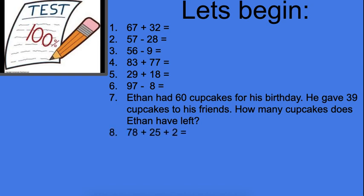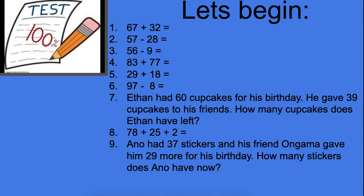Number eight, 78 plus 25 plus 2. Number nine, a story sum. Ano had 37 stickers and his friend Ongama gave him 29 more for his birthday. How many stickers does Ano have now? Again, three steps and remember what is your special word.